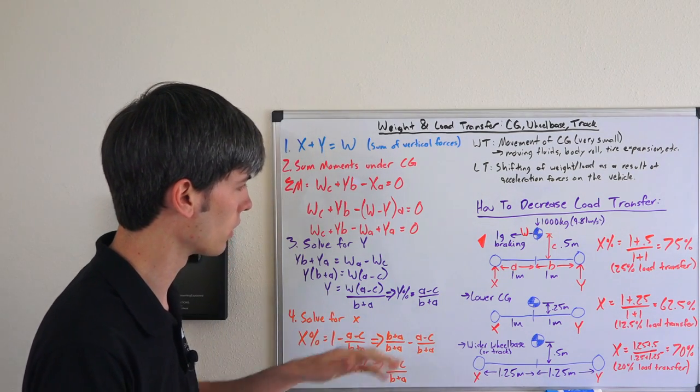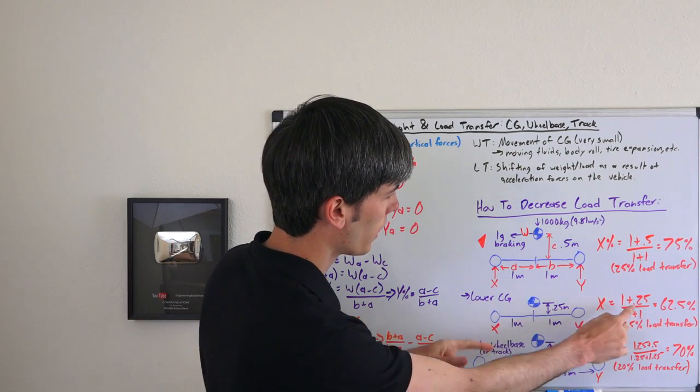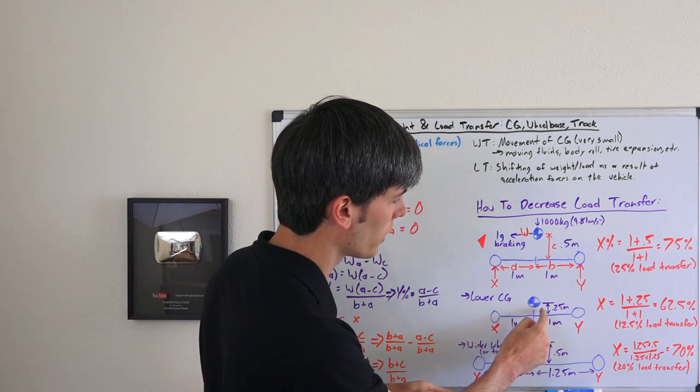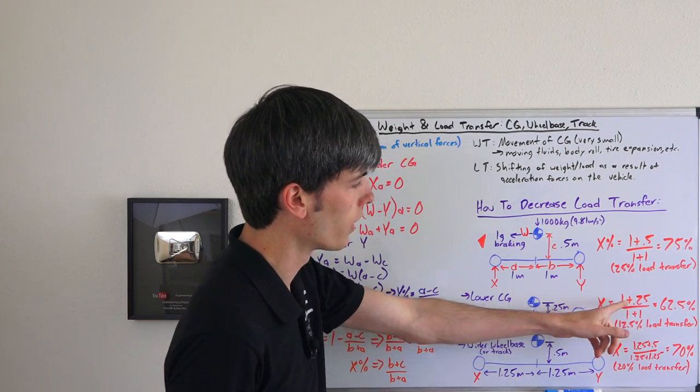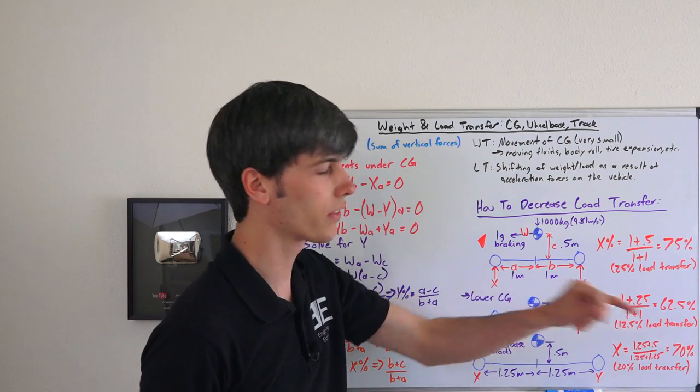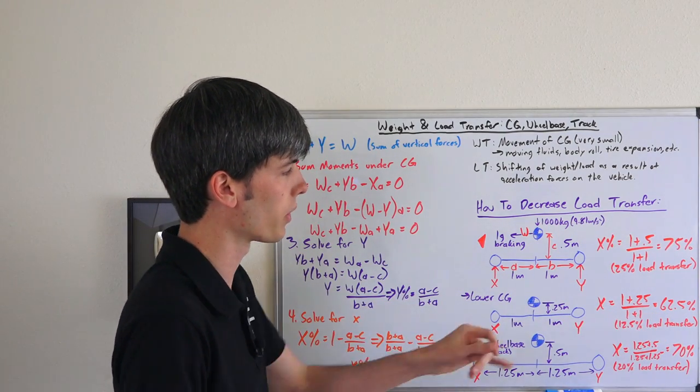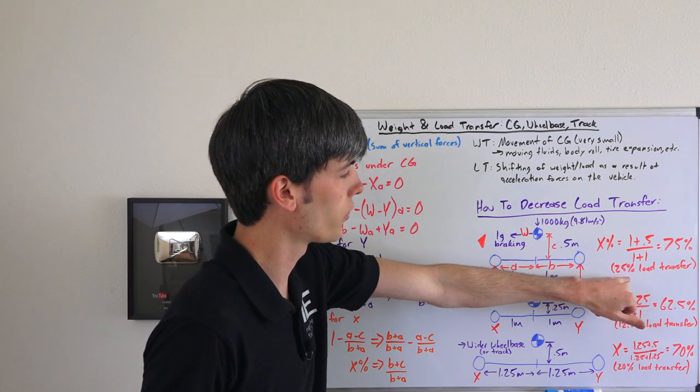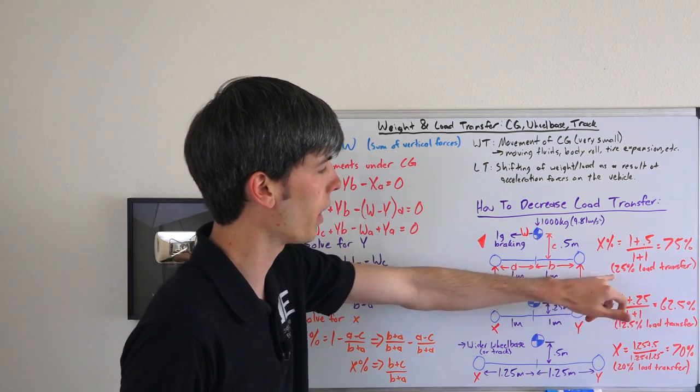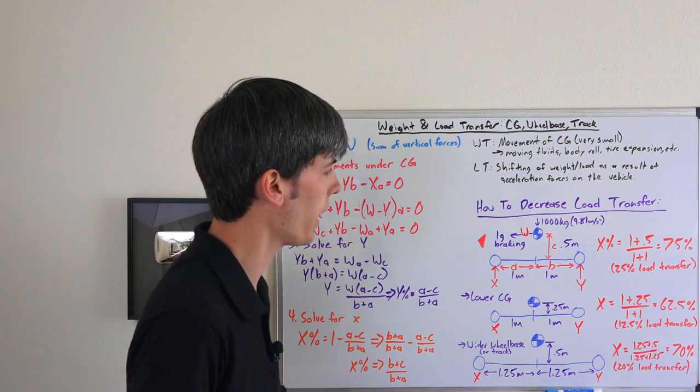Now if we lower the CG, we can alter this. So in this equation here, instead of this 0.5, which is what we had for c previously, c is now 0.25. So 1 plus 0.25 over 1 plus 1, that's going to give us 62.5%. So 12.5% load transfer from the rear to the front. And that's, as you can see, half of what we had above. So much less load transfer simply by decreasing the center of gravity by half.